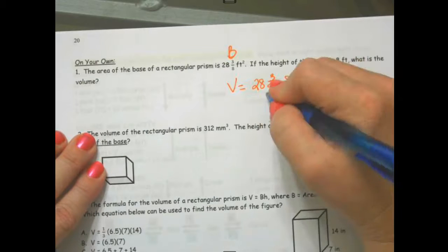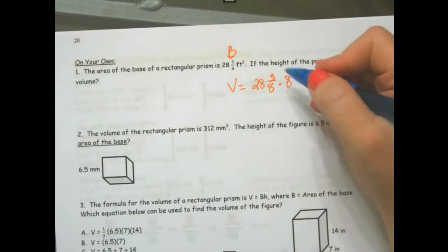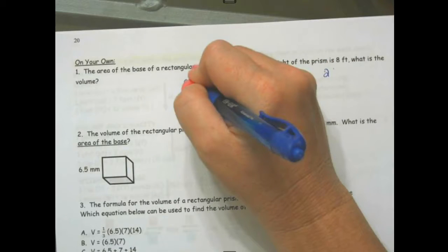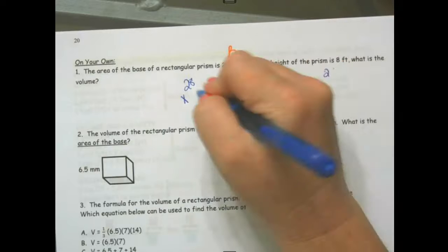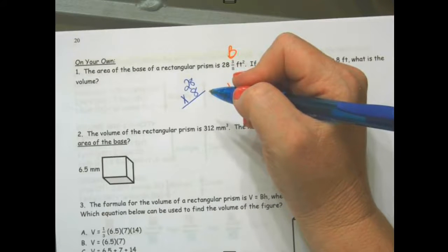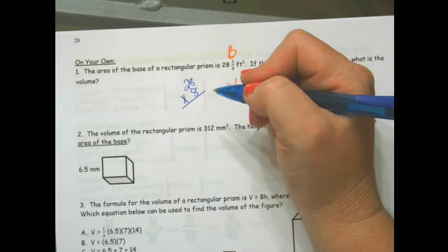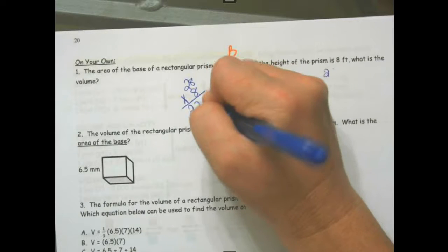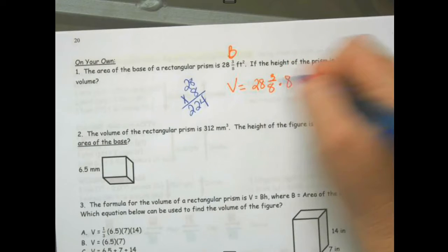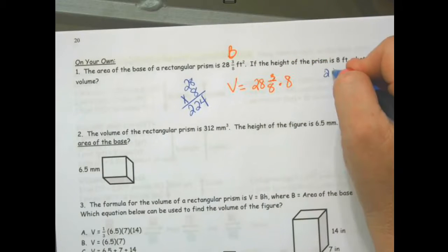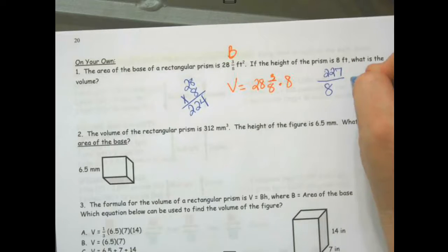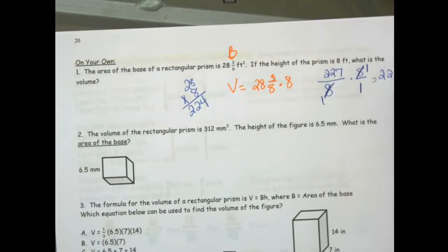8 times 8 times 3. This equals 224 plus 3, 227 over 8 times 8 over 1. These cancel out, so I get 227.